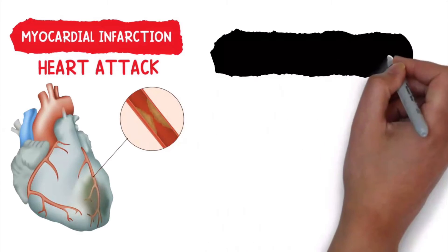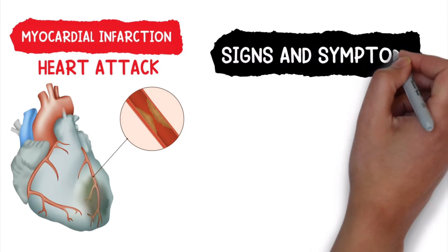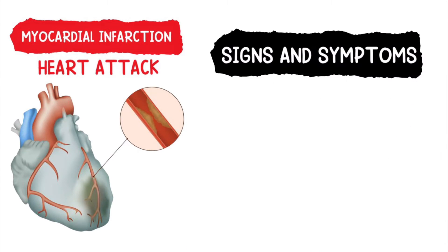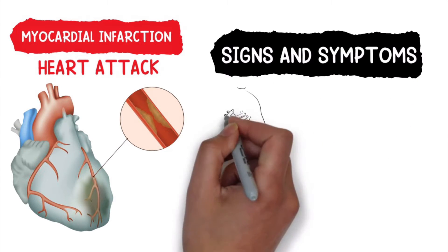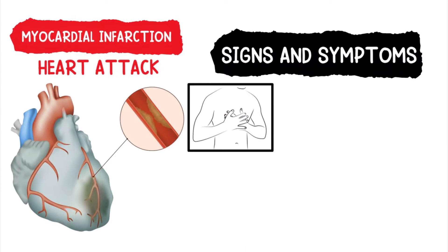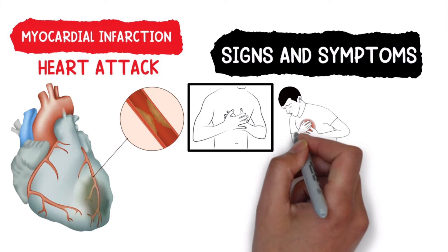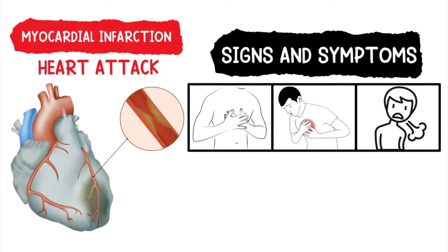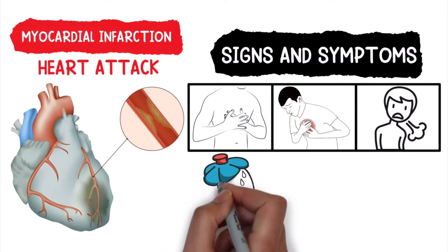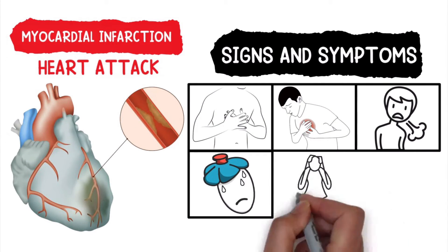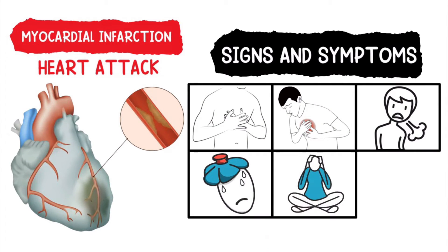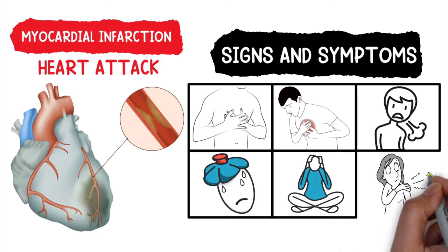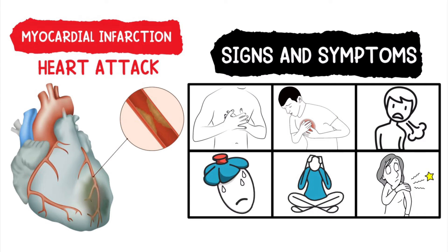Some of the common signs and symptoms of coronary artery disease include chest pain, chest tightness or heaviness, dyspnea, diaphoresis, lightheadedness, and pain or discomfort in the arms or shoulders.